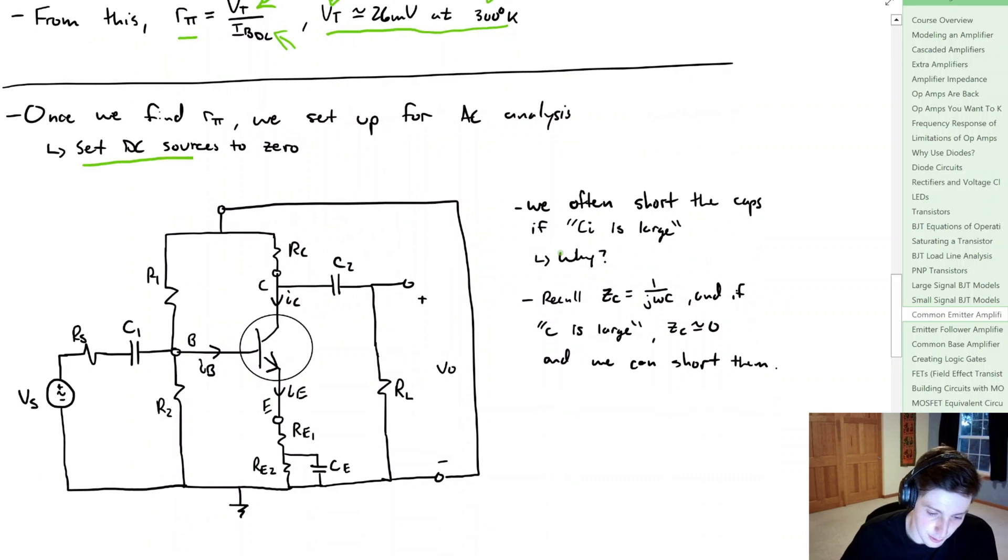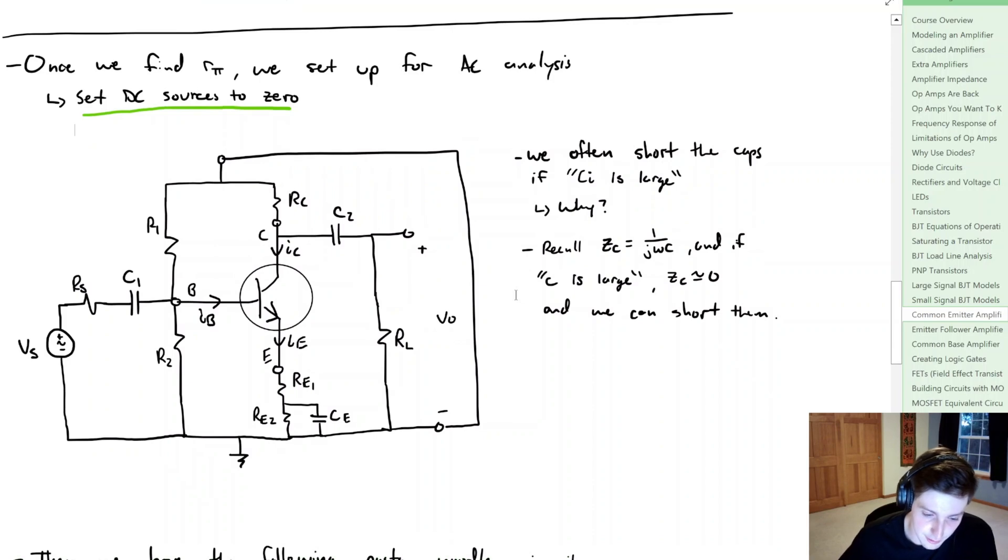So what we're going to do, we're going to set the DC sources equal to zero, so what we get is a short right here. Now if we have this short right here, well often you'll see in textbooks is that we get this blanket statement where we short the caps in the AC analysis. And the reasoning is, well if each one of those capacitors is quite large, we can assume it's a short circuit.